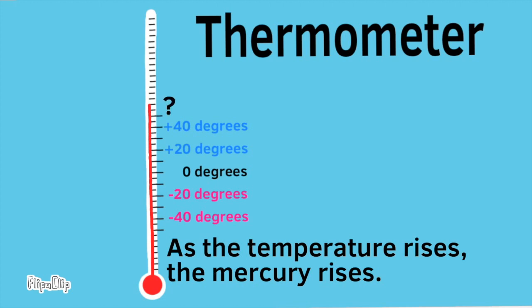What's the temperature of the mercury's new location? The temperature reads positive 60 degrees, or 60 degrees above zero.